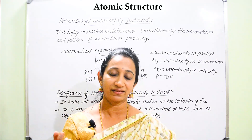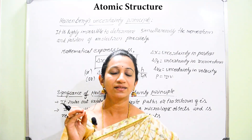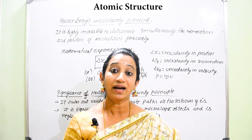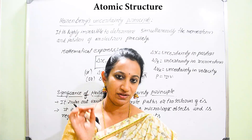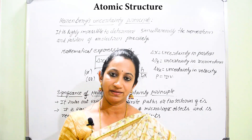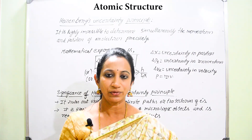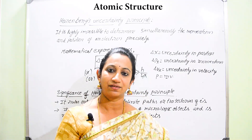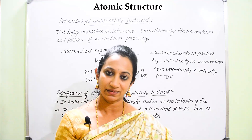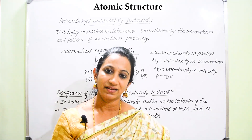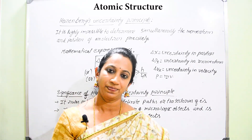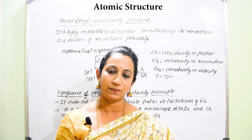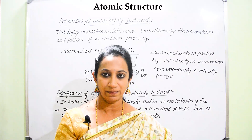The electron will be hit by photons, so it will become more energetic, and its speed will change. When you find out the position of the electron at a certain time, you can then find out the velocity. However, due to the collision with photons, there will be a change in the velocity of the electron. So if you find the velocity, you find the position — but the velocity is not the exact original velocity. Therefore, it is not possible to determine both position and momentum of a moving electron at the same time.